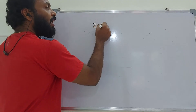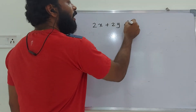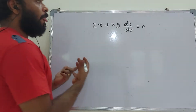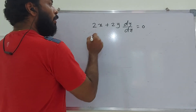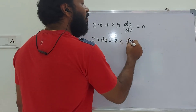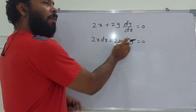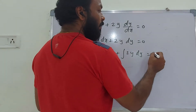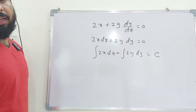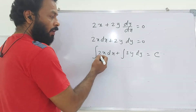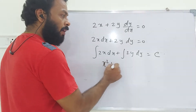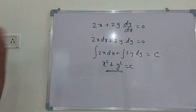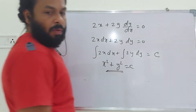Consider the first-order differential equation 2x + 2y·(dy/dx) = 0. Rearranging: 2x·dx + 2y·dy = 0. The variables are separated. Integrating both sides: x² + y² = c. This is the general solution in implicit form.